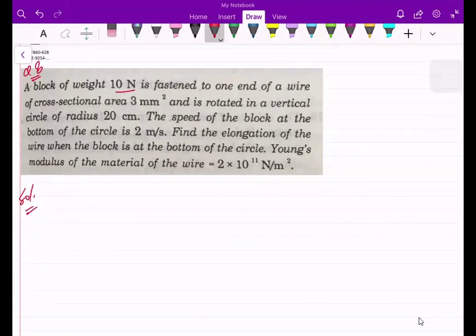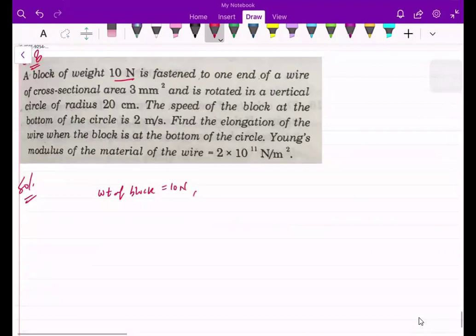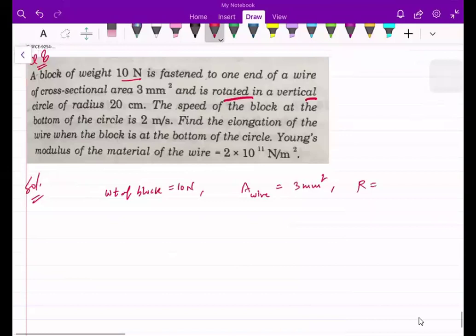We have a block of weight 10 N fastened to one end of a wire of cross sectional area 3 mm square and is rotated in a vertical circle of radius 20 cm.